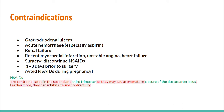Contraindications for NSAIDs include gastroduodenal ulcers, acute hemorrhage especially for aspirin, renal failure, recent myocardial infarction, unstable angina, and heart failure. For surgery, NSAIDs must be discontinued 1 to 3 days prior. NSAIDs should be avoided during pregnancy as they are contraindicated in the 2nd and 3rd trimester — they may cause premature closure of the ductus arteriosus and can inhibit uterine contractility.